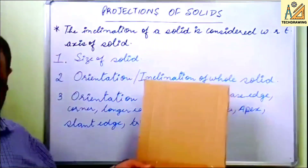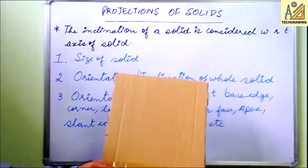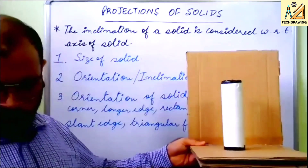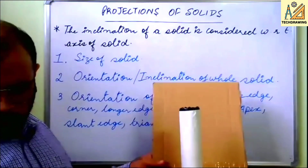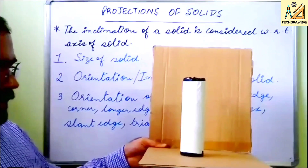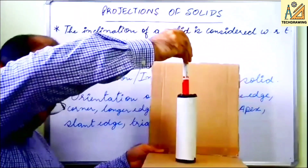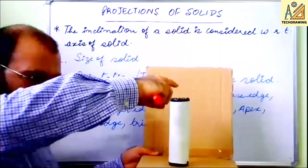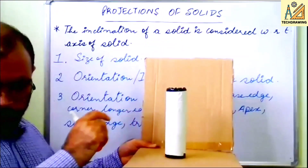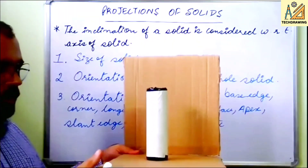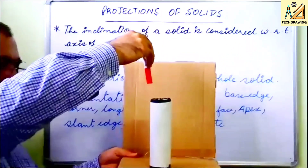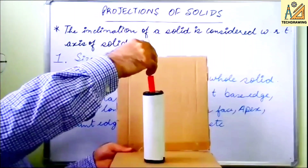What do I mean by saying that the solid is parallel or perpendicular to any of the principal planes? Let us say this is the first quadrant. This is a cylinder resting on its base on HP. It is perpendicular to HP because its axis is perpendicular to HP. You have to see its axis only, not the solid. This lateral surface may not be parallel to the axis — you have to see the axis. If the axis is perpendicular to HP and parallel to VP, then the solid is also perpendicular to HP and parallel to VP.